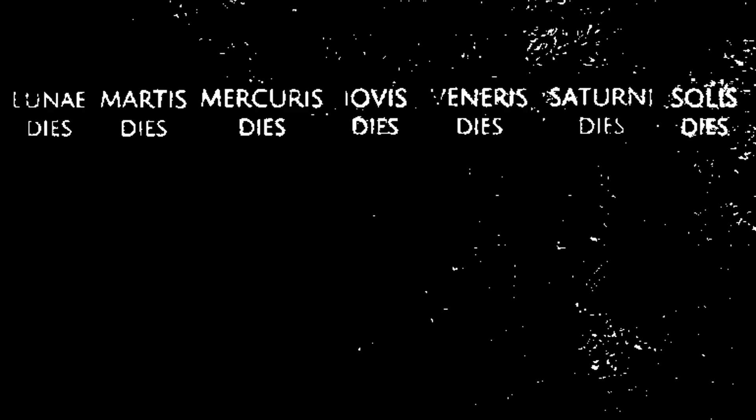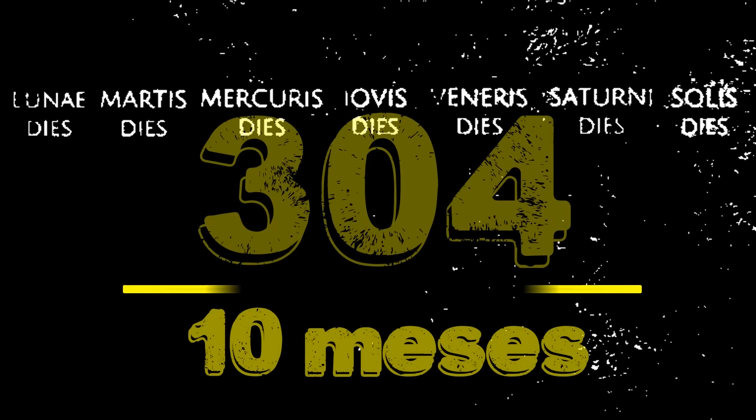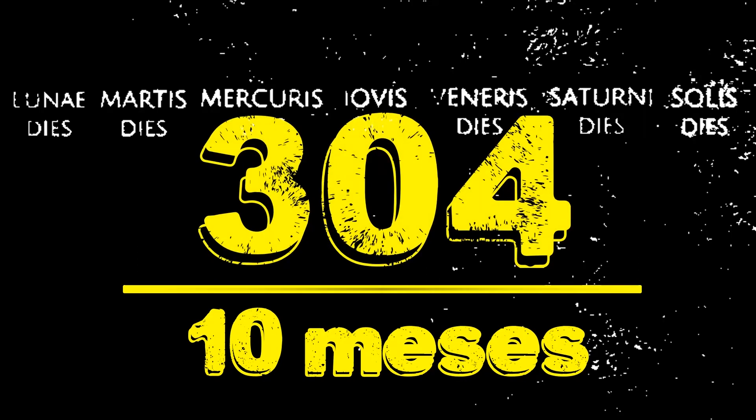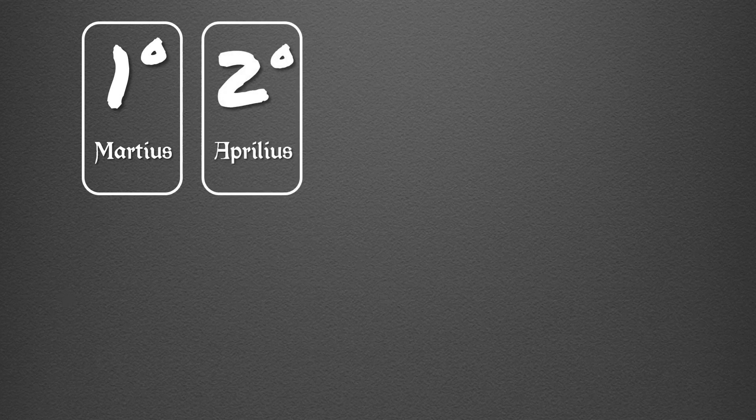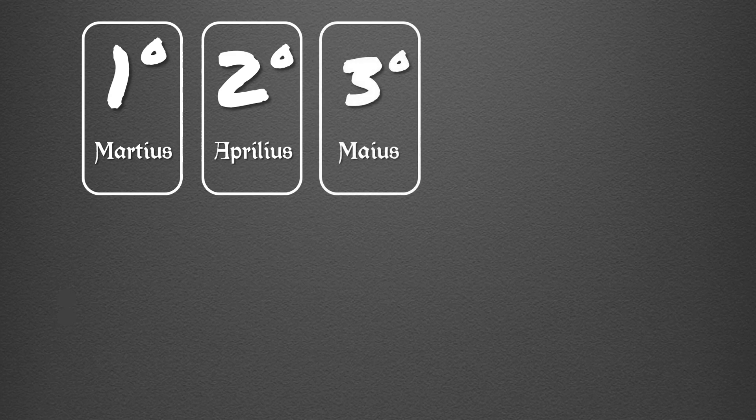En la antigua Roma los primeros calendarios tenían un registro de 304 días, agrupados en 10 meses. El primero, Martius, en español Marzo, en honor a Marte, Dios de la Guerra. Segundo, Aprilius, en español Abril, Diosa Etrusca de la Primavera. Tercero, Mayus, en español Mayo, Diosa de la Fertilidad.